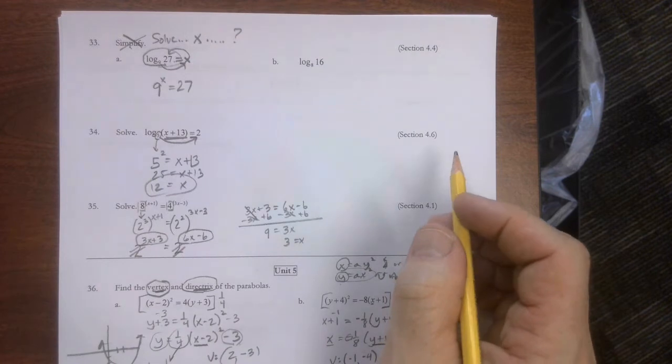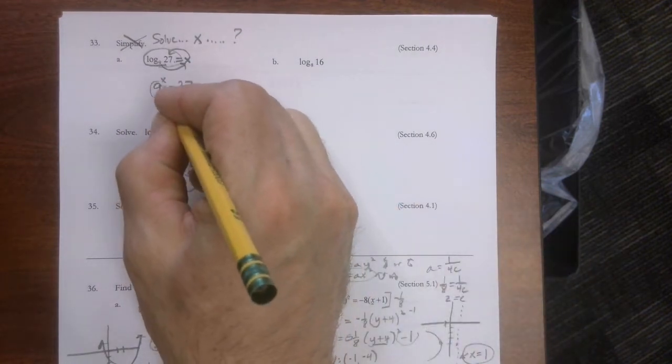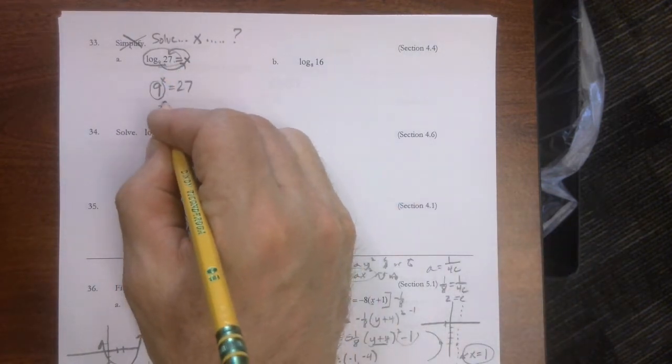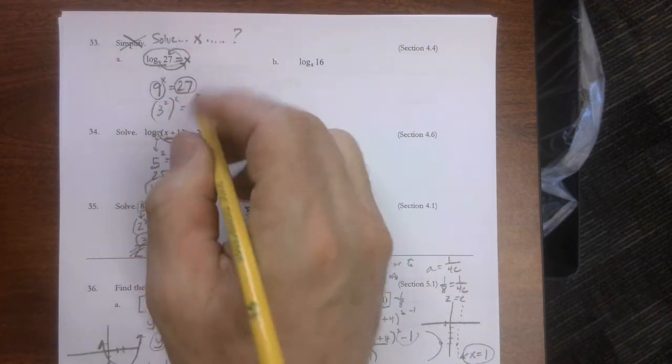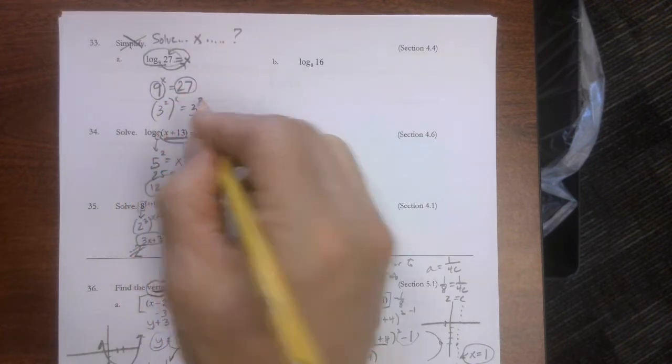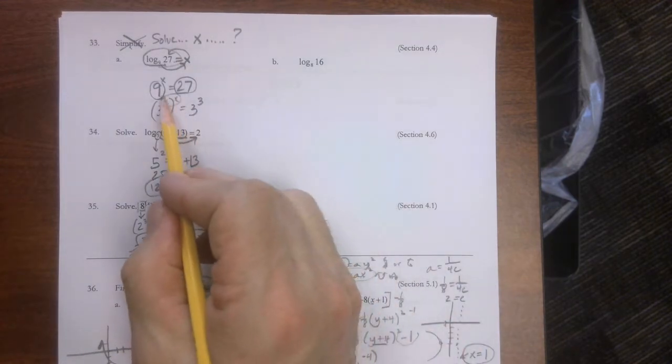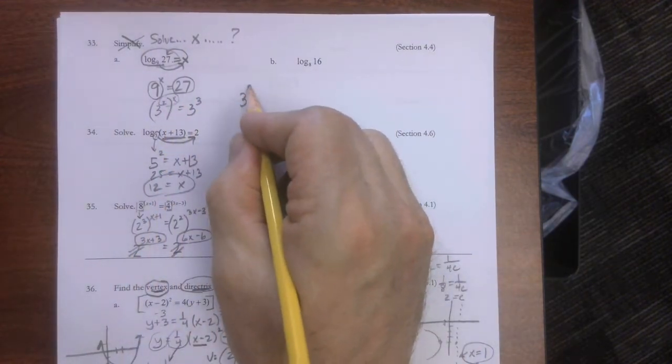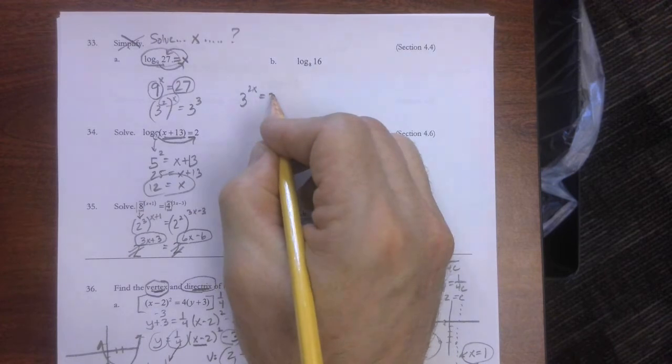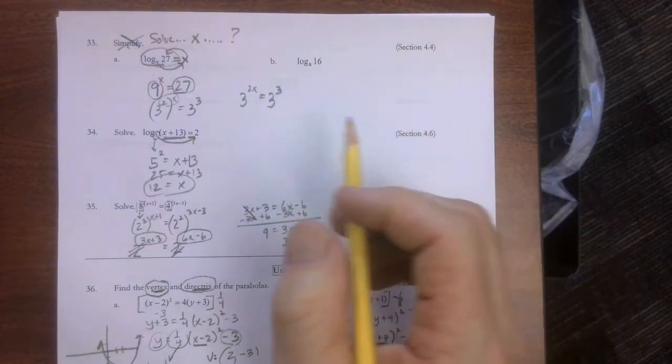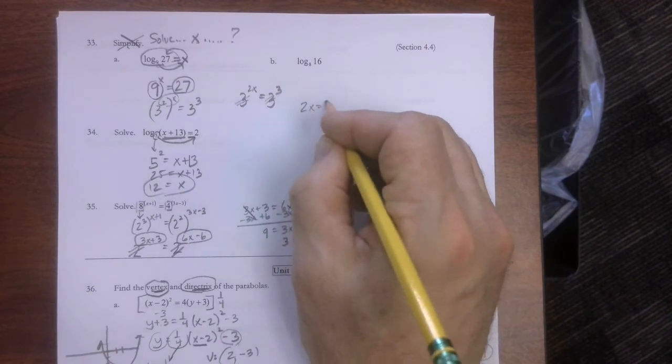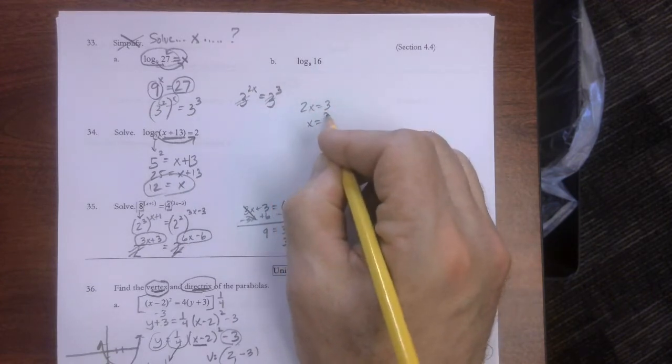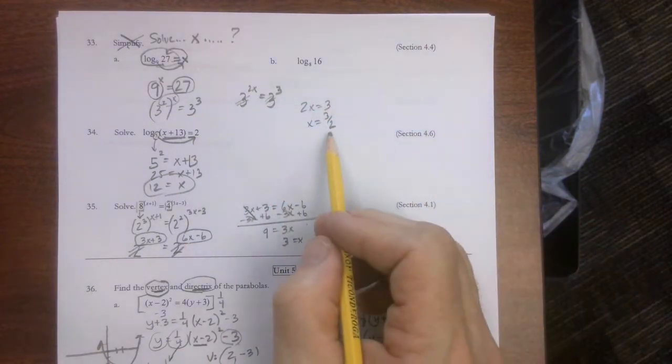Now we go common bases, happy places. I'm going to turn that 9 into a 3 squared. I'm going to turn that 27 into a 3 cubed. And now power to a power I multiply. So this is 3 to the 2x equals 3 cubed. And now common bases disappear. 2x equals 3 divide by 2, x equals 3/2.